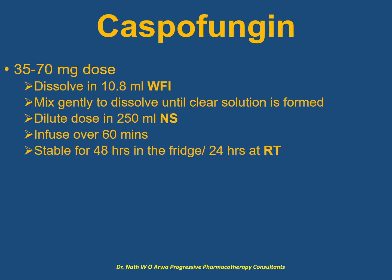For caspofungin, also an echinocandin, for doses between 35 and 70 mg, dissolve each vial in 10.8 ml of water for injection. Avoid vigorous shaking due to the tendency to foam — mix gently by inversion or swirling until the powder dissolves to form a clear solution, prior to dilution of the final dose in 250 ml of normal saline. The resultant IV solution should be infused over an hour. Such solutions are stable for 48 hours in the fridge or 24 hours at room temperature.